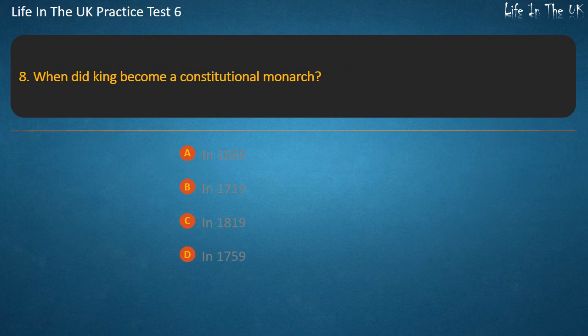Question 8. When did the King become a constitutional monarch? Options: In 1689, In 1719, In 1819, In 1759. Answer: In 1689.